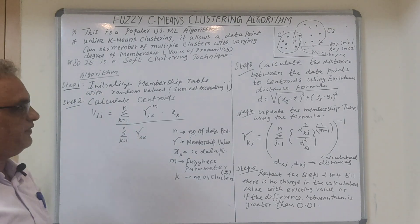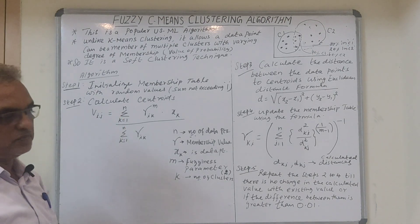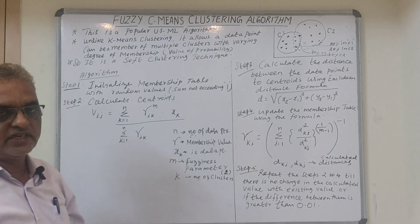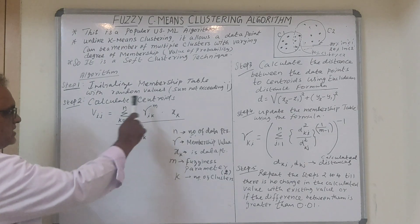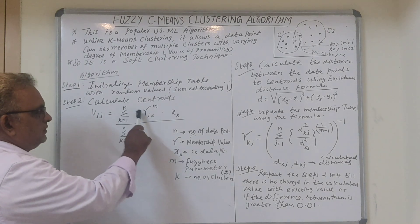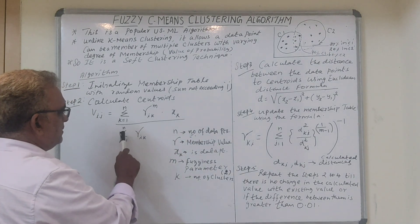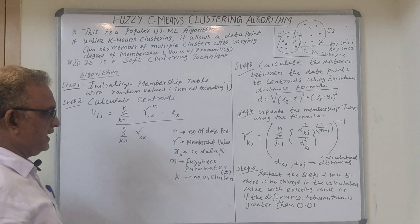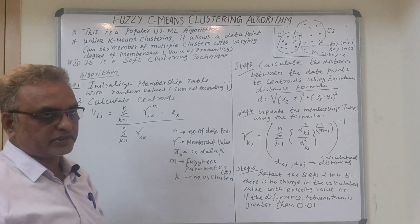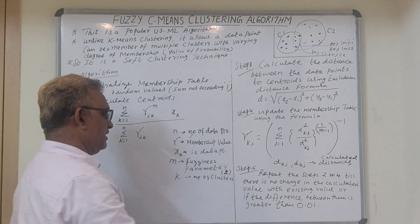Let us see the various steps of this algorithm. Step 1: initialize the membership table with random values. We assign the values randomly, but the sum should not exceed 1. Step 2: calculate the centroids using the formula v_ij = summation (k=1 to n) of mu_ik^m * x_k, divided by summation (k=1 to n) of mu_ik^m. We normally assign m = 2 as the fuzziness parameter.